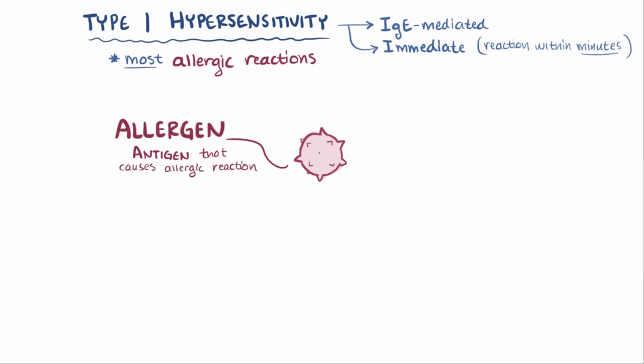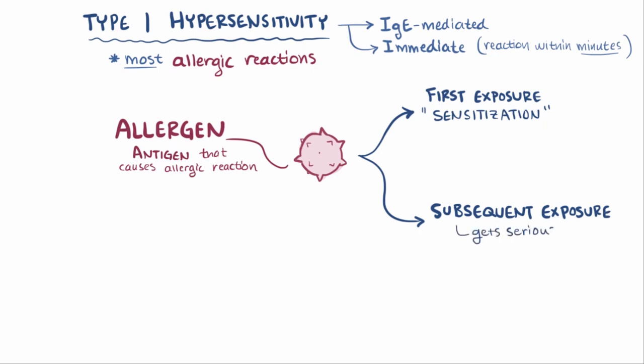An allergic reaction happens in two steps: a first exposure or sensitization, and then a subsequent exposure, which is when it gets a lot more serious.